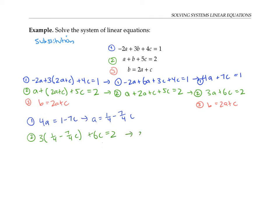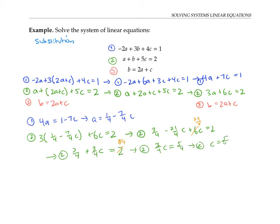Once again, I'll simplify by distributing and combining like terms. Six C is the same as 24 fourths C, and 24 fourths minus 21 fourths is three fourths C, so that's equal to two. I can subtract three fourths to the other side, so I get three fourths C equals two minus three fourths. Two is eight fourths, so eight fourths minus three fourths is five fourths. That means C is equal to five fourths divided by three fourths, which is the same as five fourths times four thirds, or five thirds. So I now have a numerical value for C: C equals five thirds.